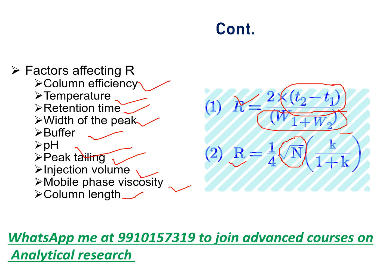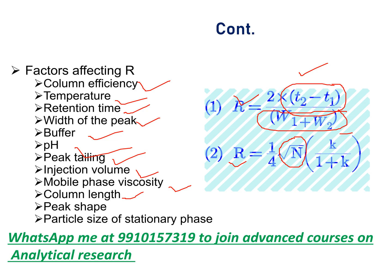Column length — on increasing the column length, resolution is increased because resolution is directly proportional to retention time. Peak shape — sharper the peak, greater is the resolution between the two peaks. Particle size — resolution is inversely proportional to particle size; on increasing particle size of the stationary phase, resolution is decreased, and on decreasing the particle size, resolution is increased.